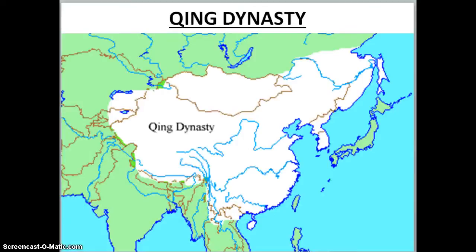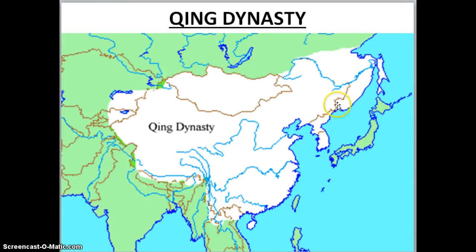Here is the Qing dynasty and its borders. Just like with the Ming dynasty, take out a highlighter or colored pencil — whatever you have — to make these boundaries stick out on your map. It is going to be this lighter gray color. This is the Qing dynasty.